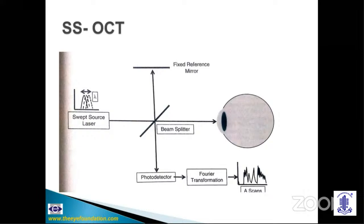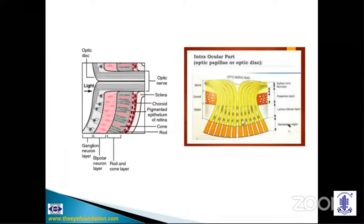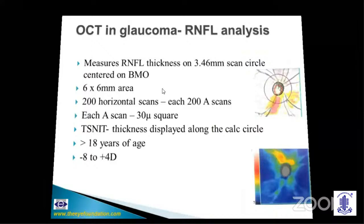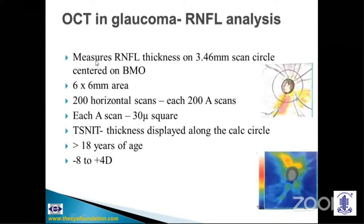The advantage of high scan speed is to reduce motion artifacts and improve resolution — axial resolution of currently available devices is of the order of 5 micrometers. In the histology of the optic nerve head, all machines estimate the position of the optic disc by the termination of Bruch's membrane and the margin of the cup as the termination of the internal limiting membrane. The foveola does not have any ganglion cell layer. OCT in glaucoma measures the RNFL with three components: RNFL analysis, optic nerve head analysis, and ganglion cell analysis — all three need to be correlated with the clinical picture. The RNFL analysis measures RNFL thickness on a 3.46 millimeter scan circle with 200 horizontal B-scans each containing 200 A-scans. The normative database is only present for patients above 18 years of age and for refractive error spanning minus eight to plus four diopters.